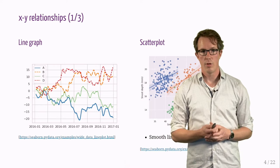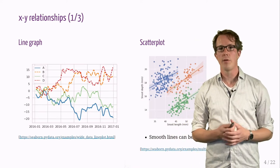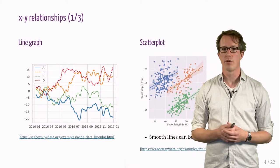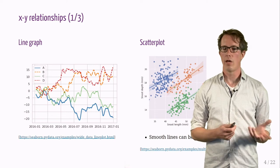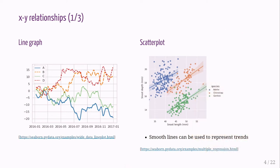Let's start with perhaps the most common type of XY relationships. On the left side, I show a line graph with different colors and different dash patterns, and on the right side, we see a scatter plot where we have added some lines that have been added to represent the trend.